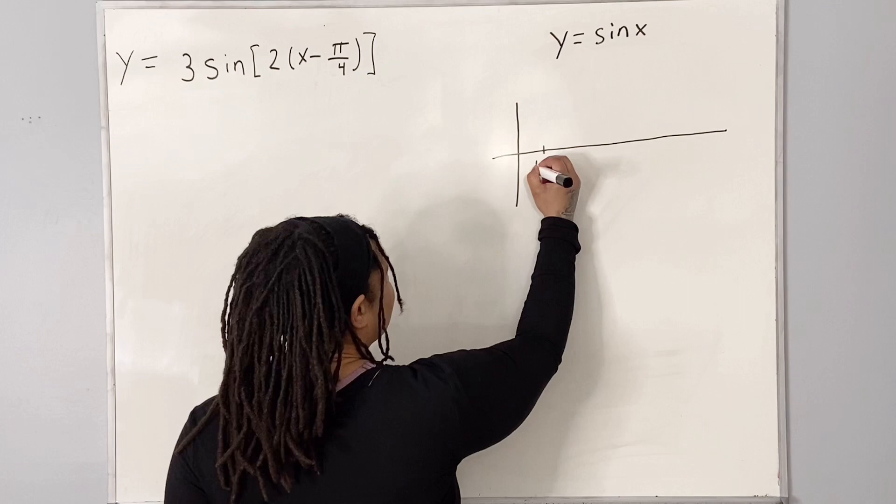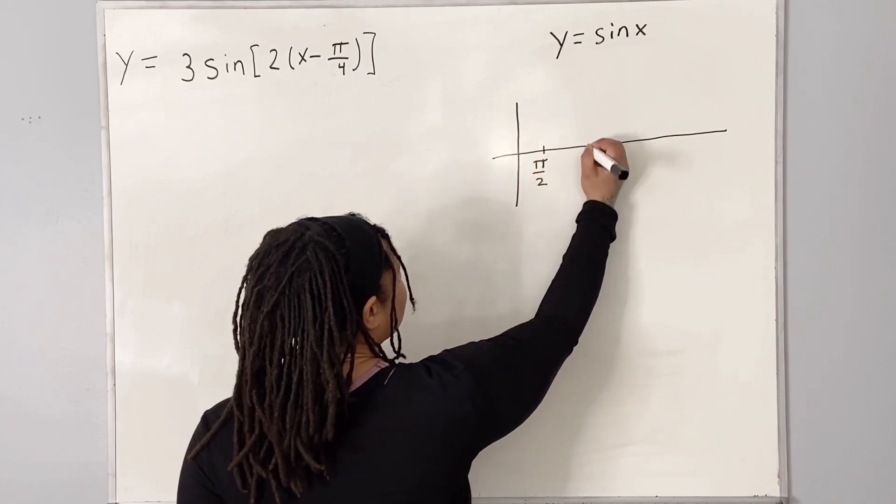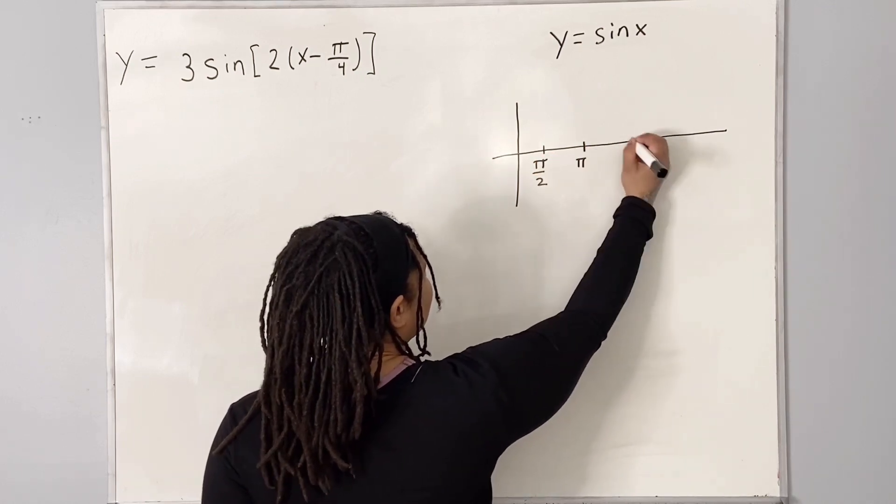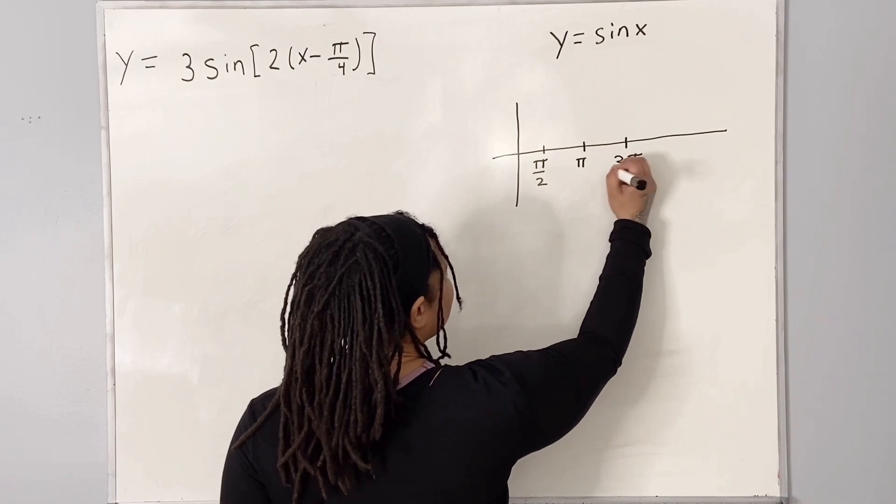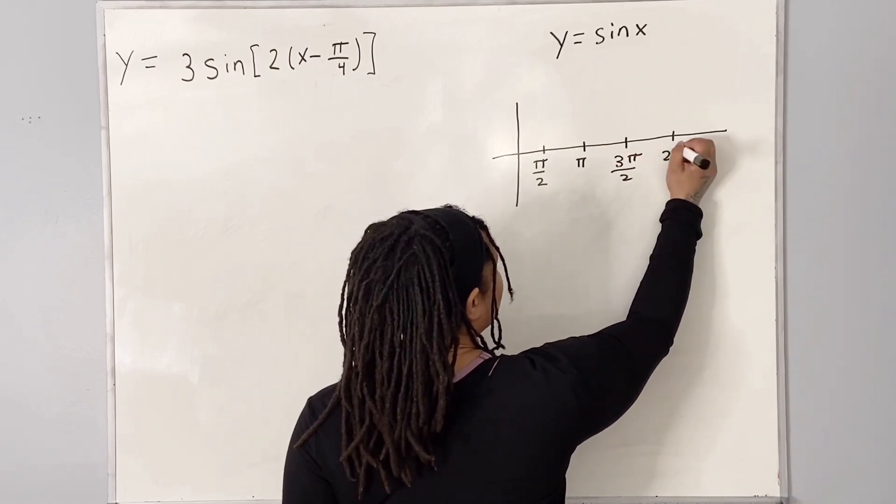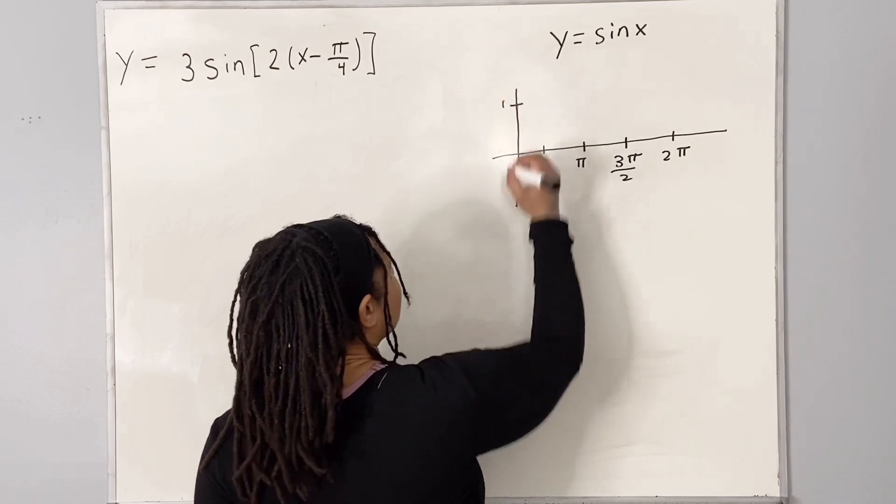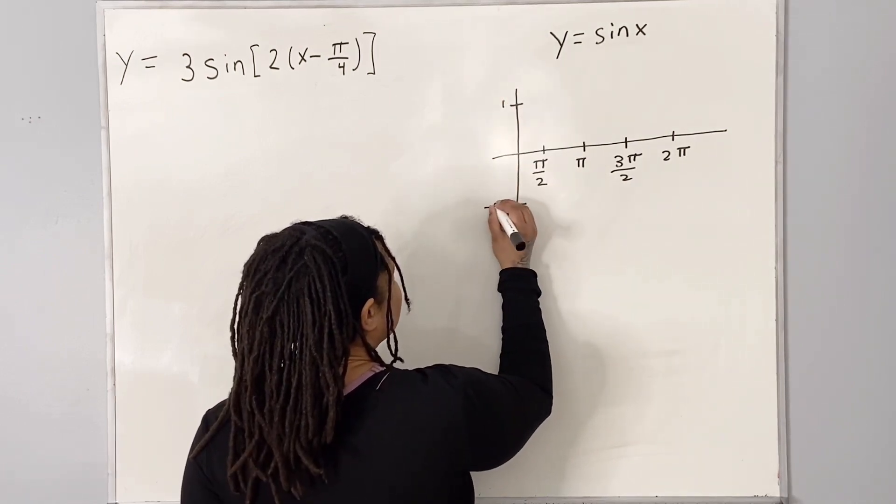And here we have an x scale of pi over 2, pi, 3 pi over 2, and 2 pi. And here we have a high at 1 and a low at negative 1.